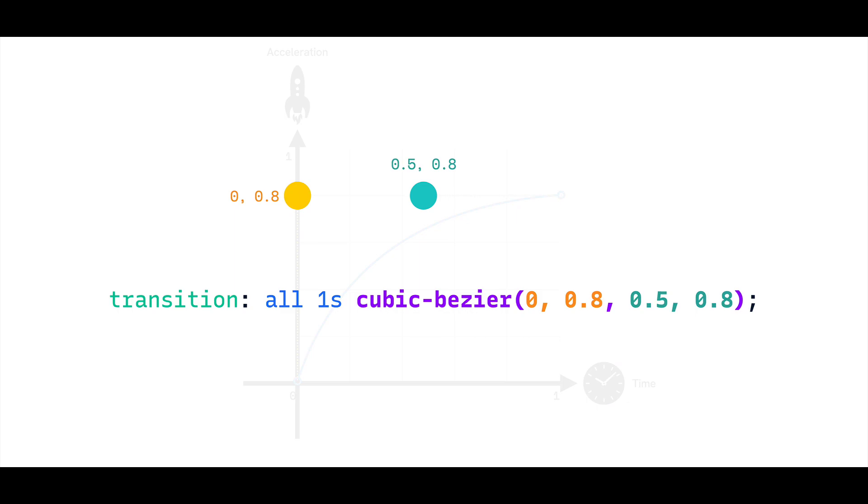These curves are made using two handles, exactly like when we draw curves in Adobe Illustrator, for example. The x-y coordinates of each handle are the four numbers that go into our Cubic Bezier, x being time, and y being acceleration or motion.